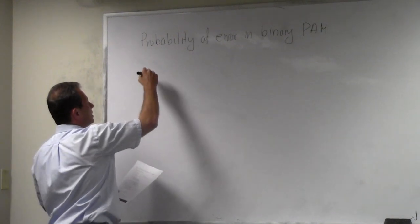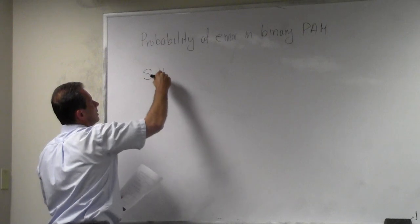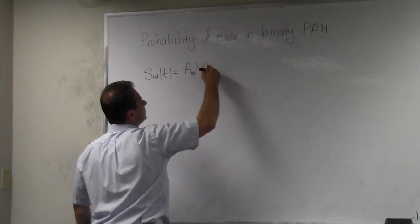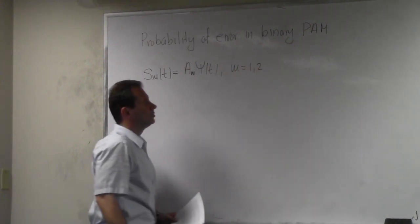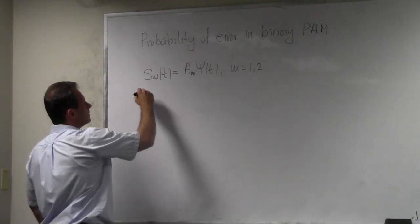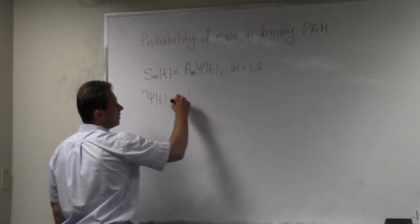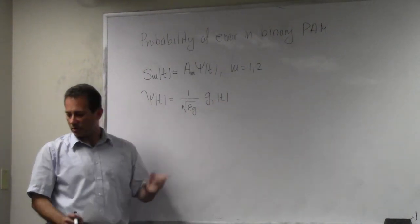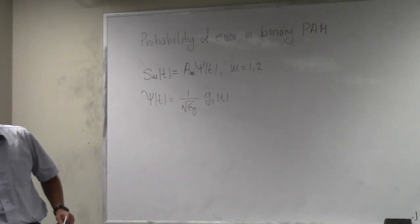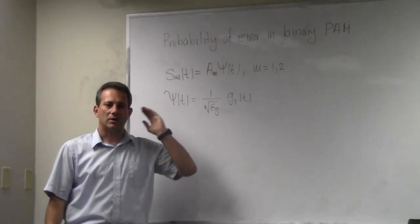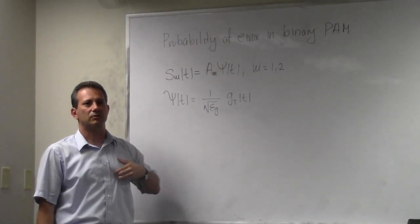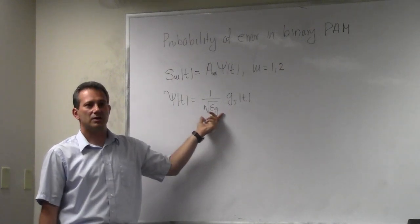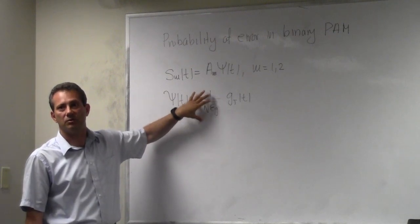How do binary PAM signals look? We have s_m(t) = A_m × ψ(t), where m is either one or two, because you have two symbols in your constellation. This ψ(t) is our basis vector, and it's going to be 1/√(E_g) × g_T(t). This g_T(t) is the pulse that we use for signaling. In the most simplistic case we can use a square pulse, but we can use any other rounded pulses. The square root of energy downstairs is just to make the norm of ψ(t) equal to one.